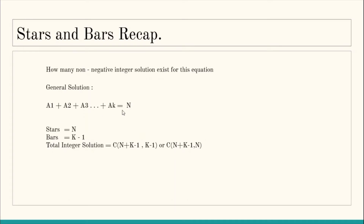Where k is the number of variables. The total number of non-negative integer solutions of this equation is C(n + k - 1, k - 1), because we need to place k minus 1 bars among the total number of boxes, or equivalently place n stars among n + k - 1 boxes. This was the solution for the equation in its standard non-negative form.